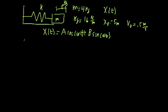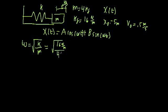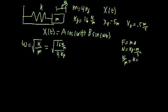Let's start with omega. We know that omega is defined as the square root of K divided by M. Let's plug in: K is 16 newtons per meter, and mass is 4 kilograms. To make the units work out, recall that since force equals mass times acceleration, one newton equals one kilogram times meter per second squared. So a newton per meter is just a kilogram per second squared.